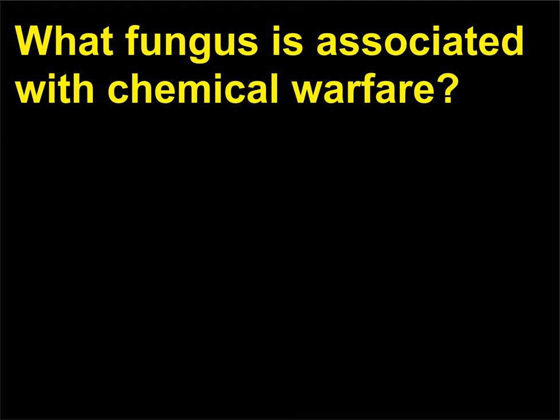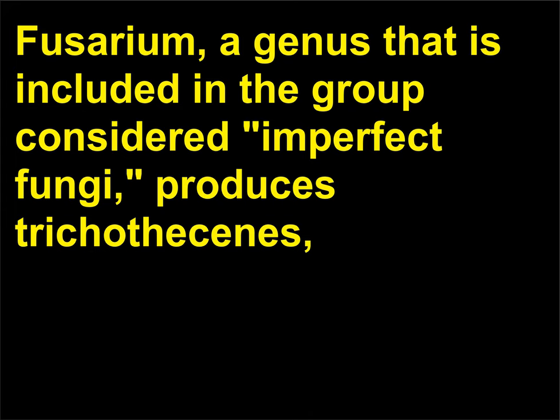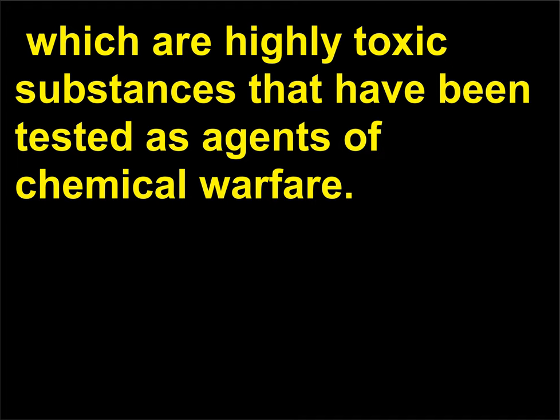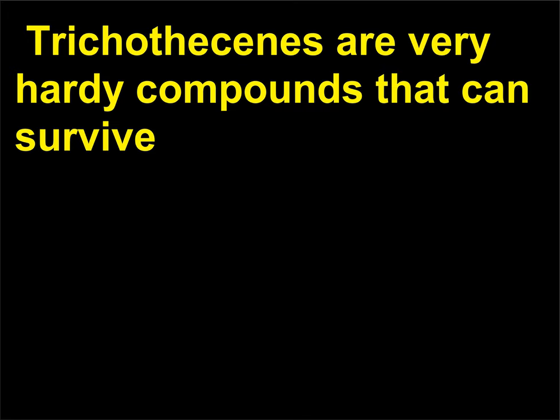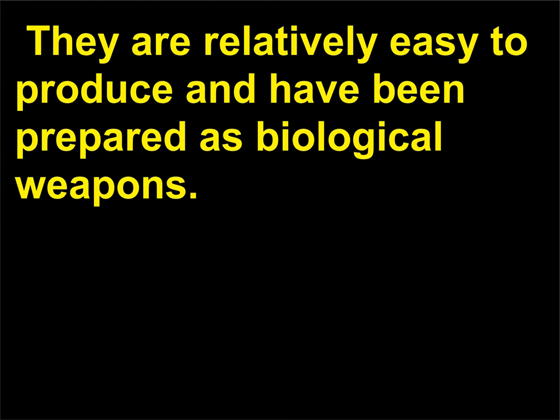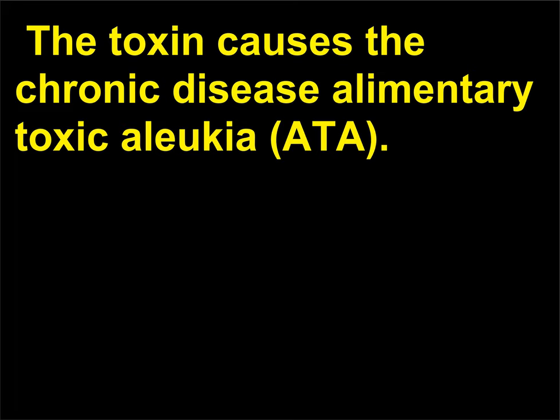What fungus is associated with chemical warfare? Fusarium, a genus included in the group considered imperfect fungi, produces trichothecins, which are highly toxic substances that have been tested as agents of chemical warfare. Trichothecins are very hardy compounds that can survive autoclaving and do not degrade when exposed to light. They are relatively easy to produce and have been prepared as biological weapons. The toxin causes the chronic disease Alimentary Toxic Aleukia.